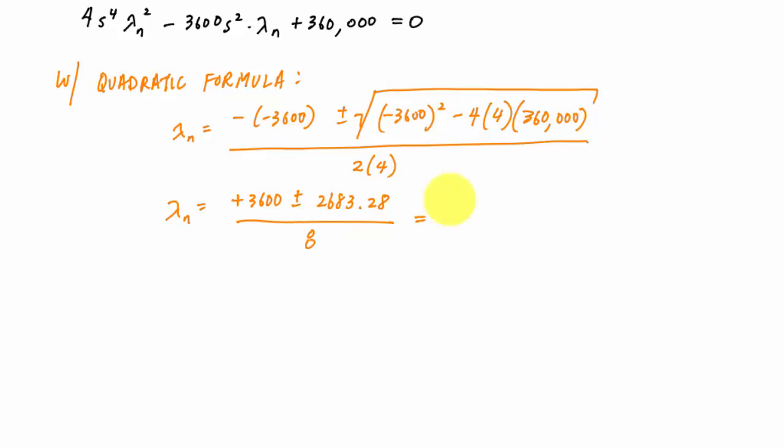I get two roots to this quadratic equation: 114.59 one over second squared and 785.41 one over second squared. Remember that lambda n equals omega n squared, so the omega n values are just the square root of each of these numbers: 10.70 radians per second and 28.02 radians per second.